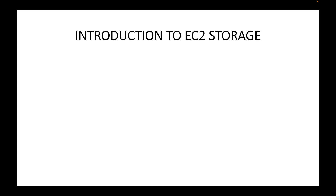In this session we will look at an introduction to the storage options available to the EC2 instance, and also an introduction to one of those storage options: EBS. In the last session we looked at an introduction to AMI, which stands for Amazon Machine Image — this is simply your operating system. You can specify which OS you want, such as macOS, Windows, or Linux Red Hat, by making use of your AMI.